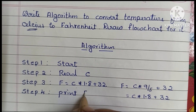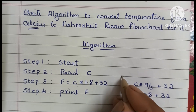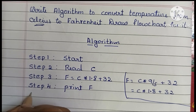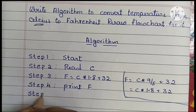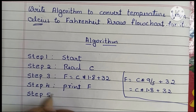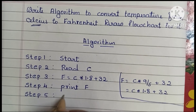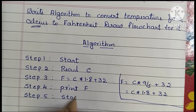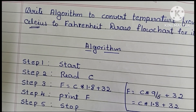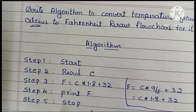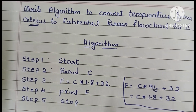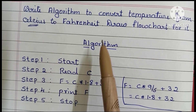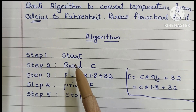Step 4: we have to print the output value, which is F. Step 5: we have to stop the algorithm using the stop statement. This is the complete algorithm to convert temperature from Celsius to Fahrenheit.